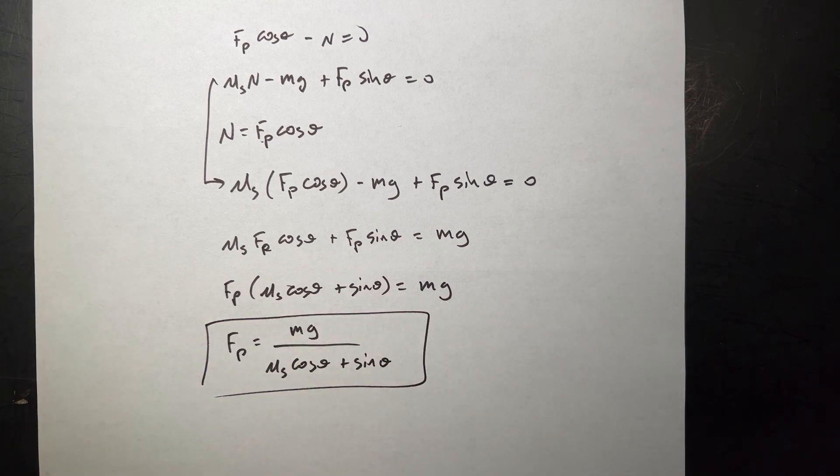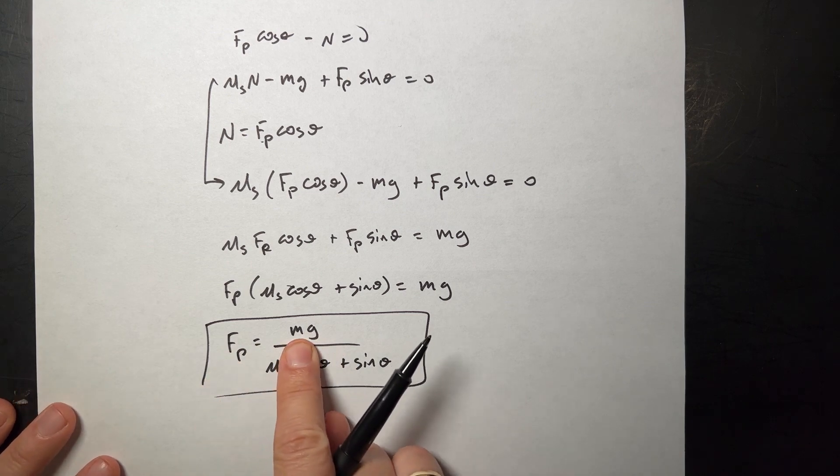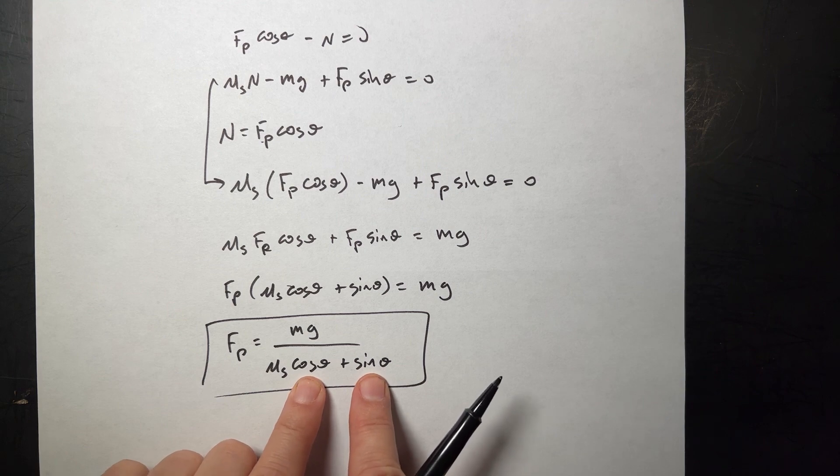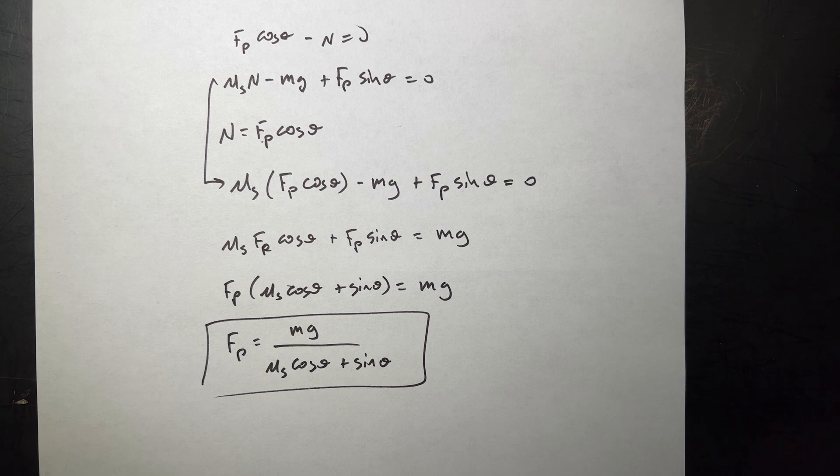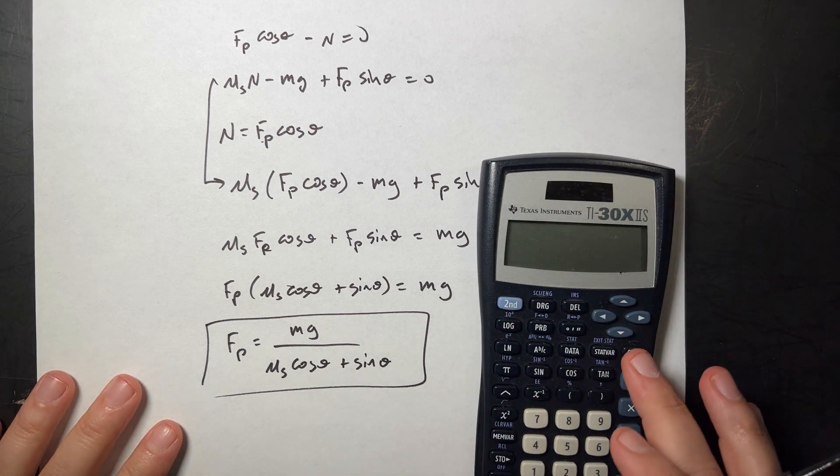Does it have the correct units? Well, this should be in force, newtons. M times g is a force in newtons. Mu has no units. Cosine theta has no units. Sine theta has no units. Remember, these are ratios for right triangles, and that's just a coefficient. So the bottom has no units. We end up with newtons. I was trying to think of the next thing. Let's just calculate the answer from there, because some things aren't completely obvious here.